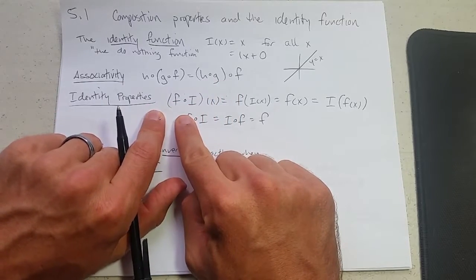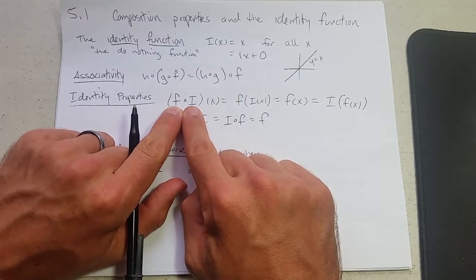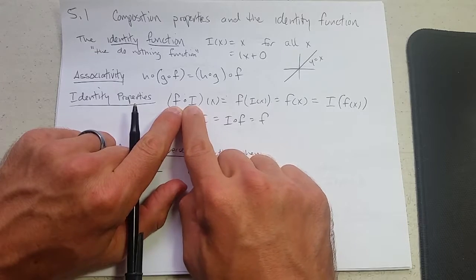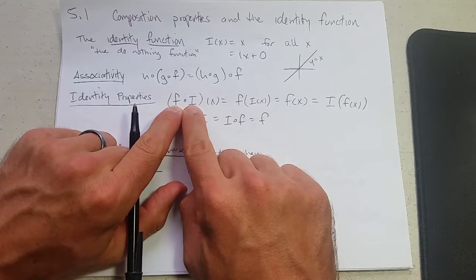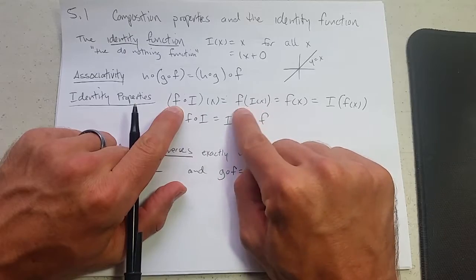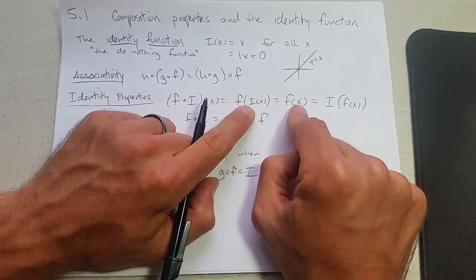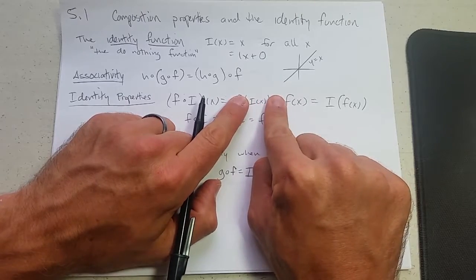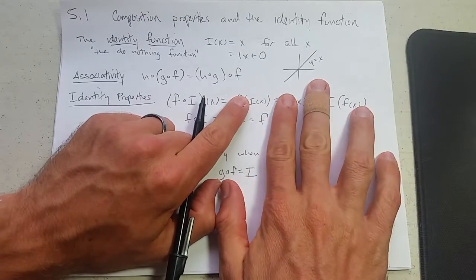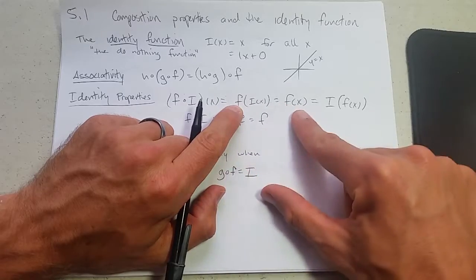Identity properties. If you compose any function with the identity, the identity does nothing. So f composed with I. We could write it like this. This is more useful. What does I do to x? Nothing. So I of x just turns into x. So f of I of x equals f of x.